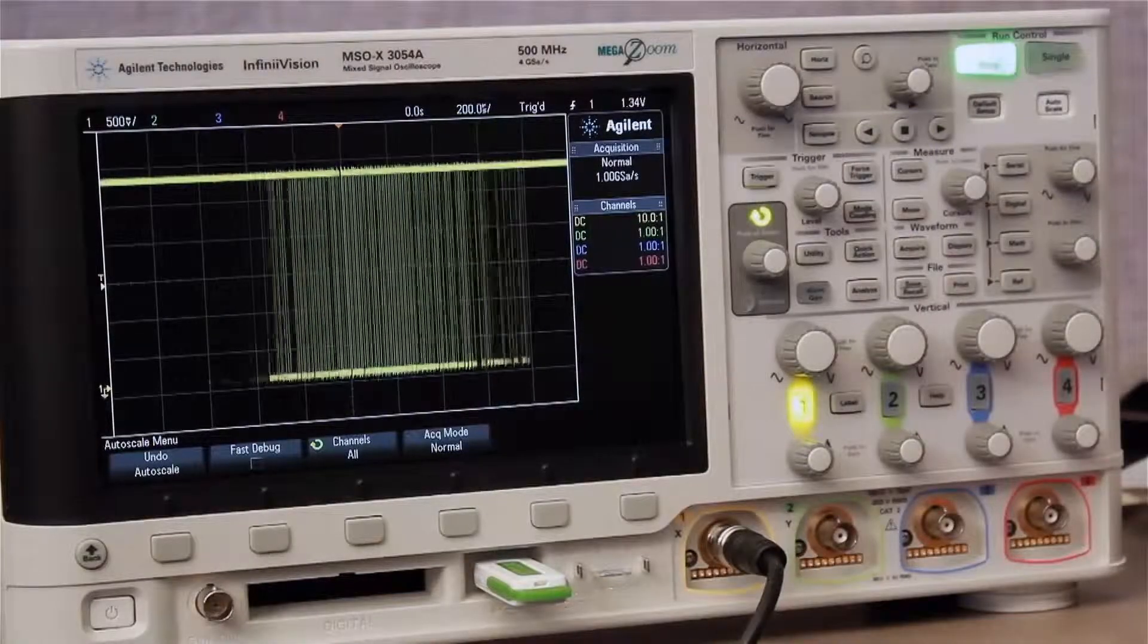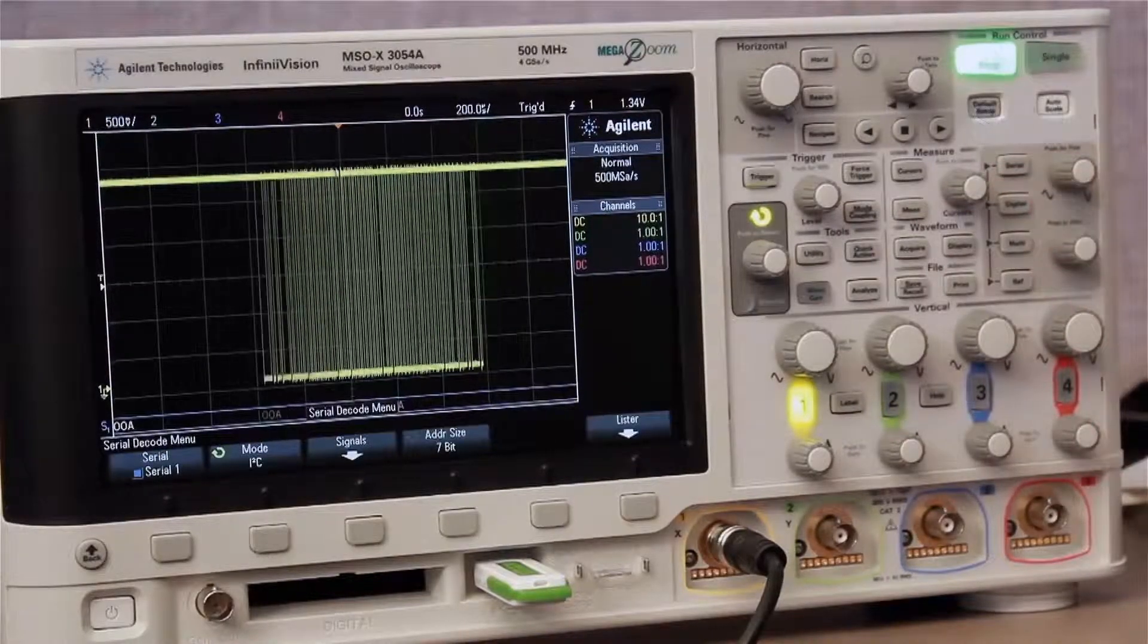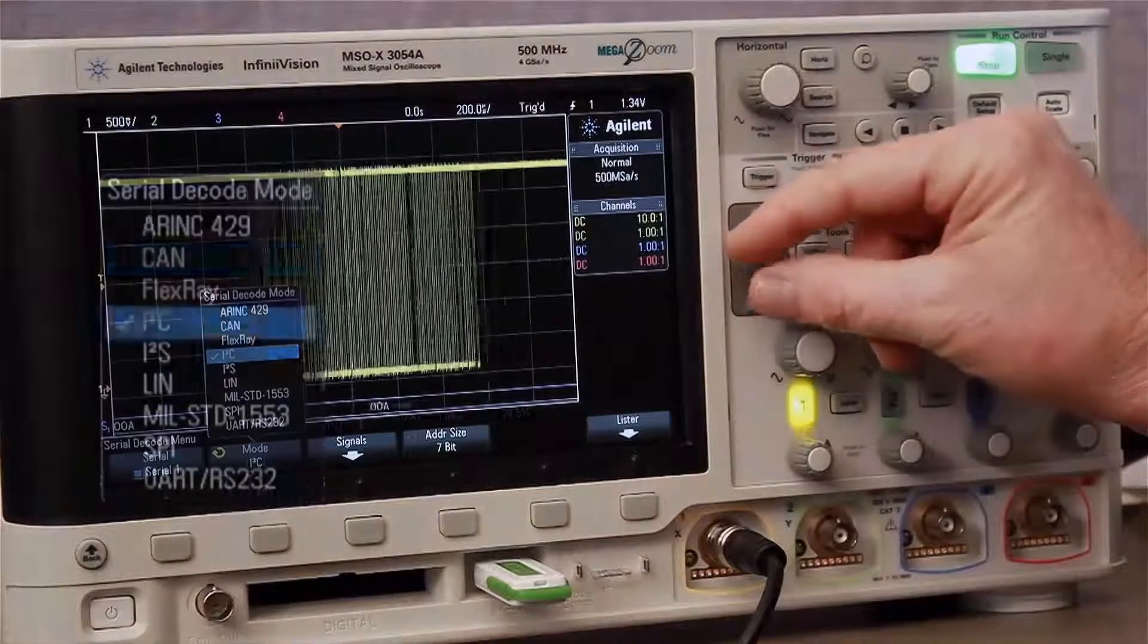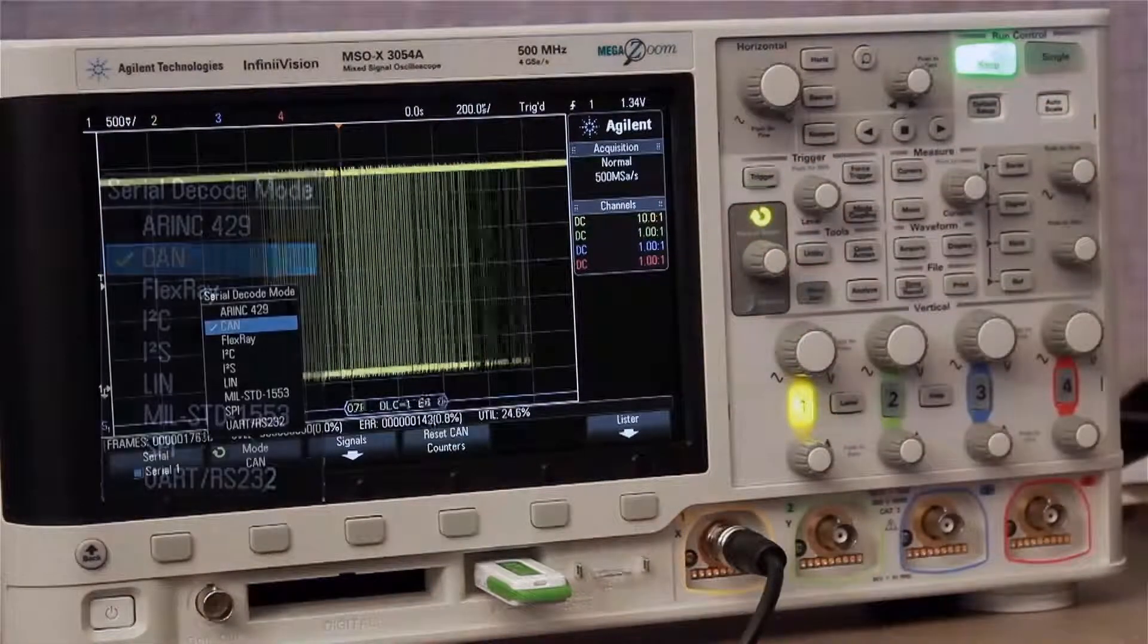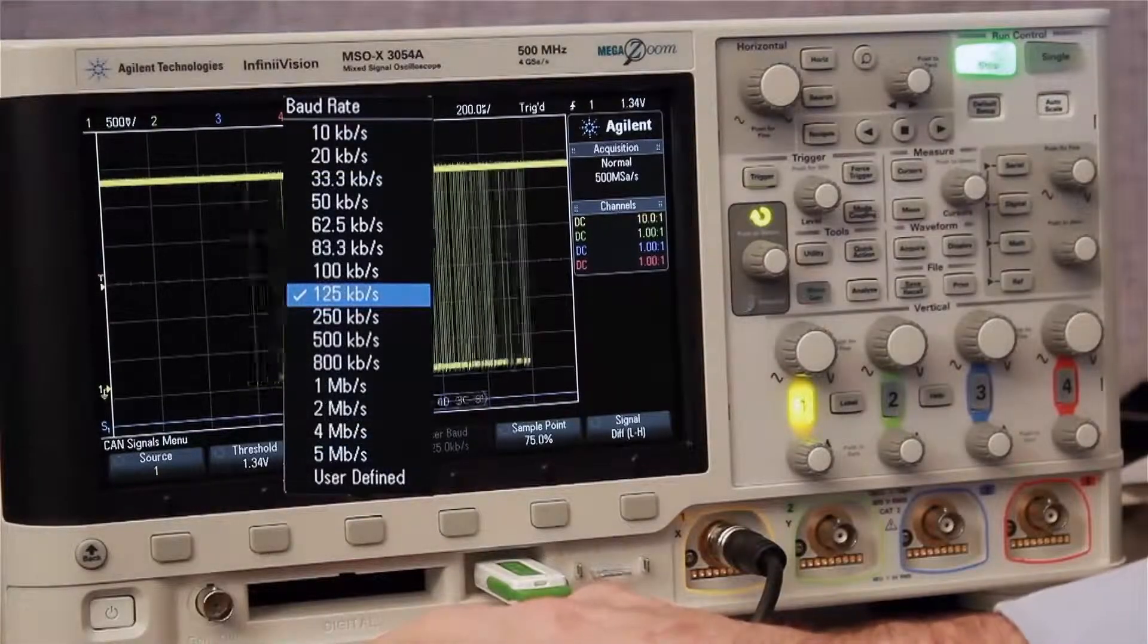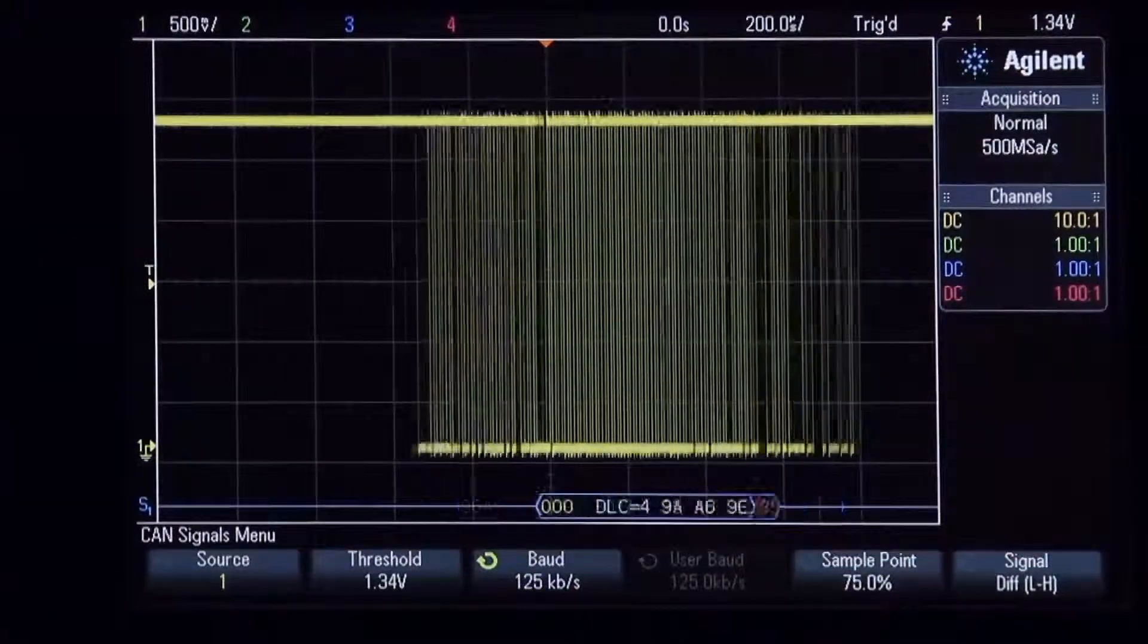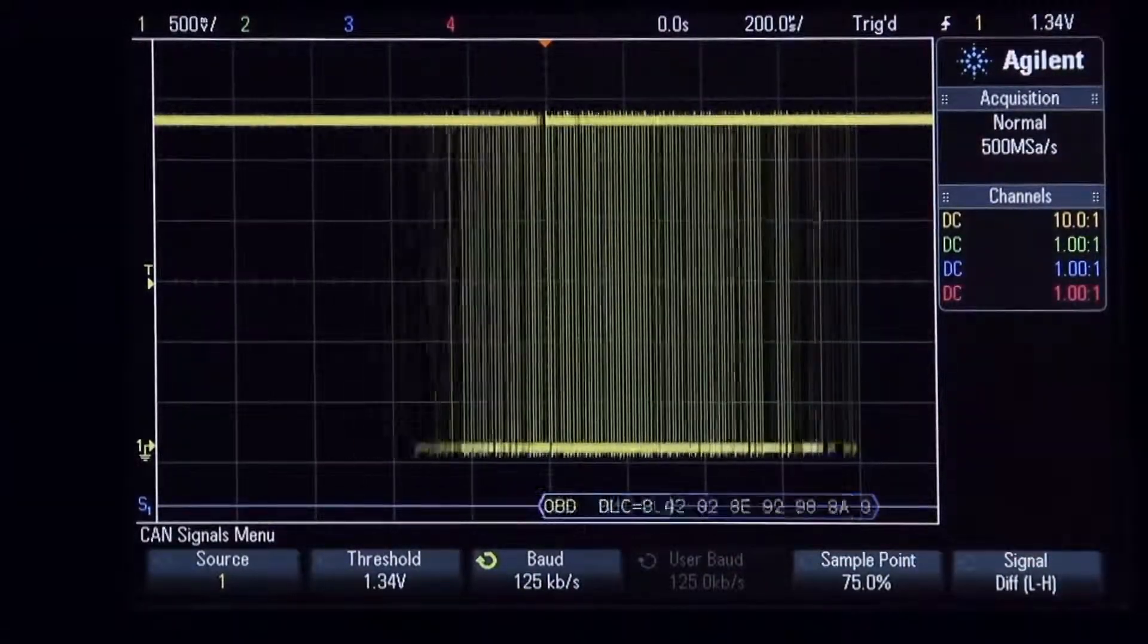To decode this bus, first press the serial front panel key and then select the CAN decode mode. Then press the signal soft key in order to select the appropriate baud rate. The scope is now decoding this bus, but the scope is still just triggering on random rising edges of the signal.